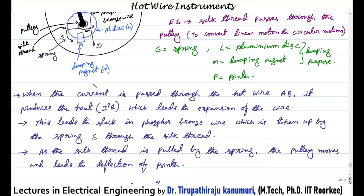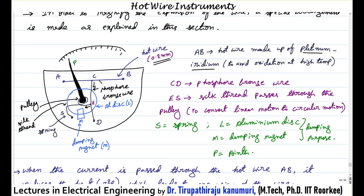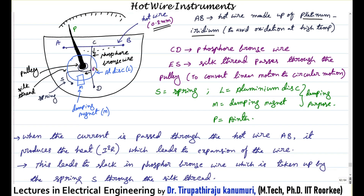When the current is passed through the hot wire AB, it will expand. Whenever the hot wire expands, point C is pulled downwards, and the spring tries to pull the phosphor bronze wire towards the pulley. Because of this, the linear motion is converted to rotational motion and the pointer deflects. The reason for this deflection is expansion of wire AB, which is due to the rise in temperature.